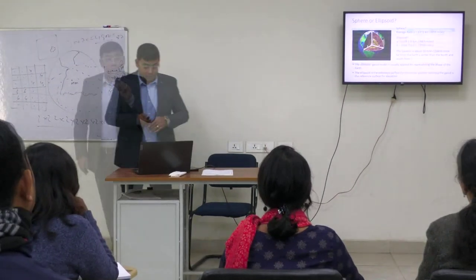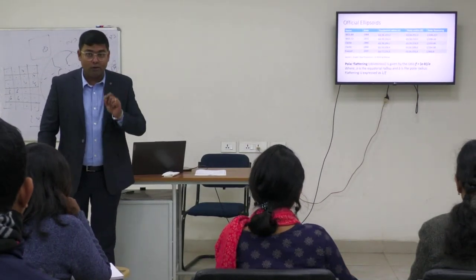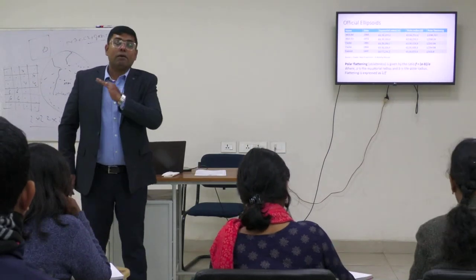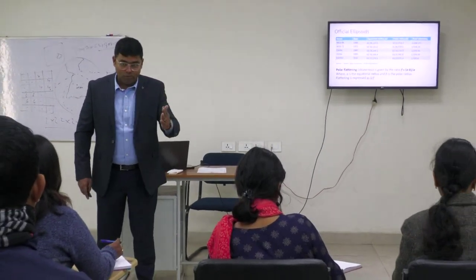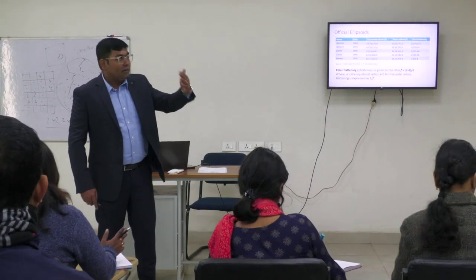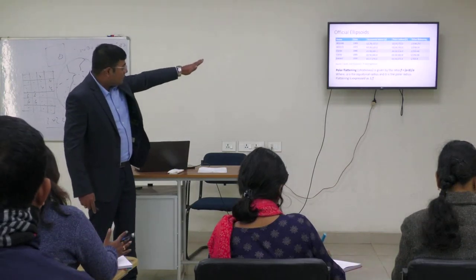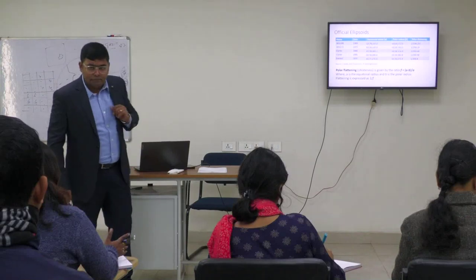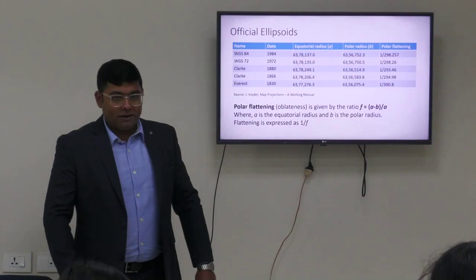Moving forward, I am always referring to it as the ellipsoidal model because there are numerous ellipsoids. The ellipsoid is a global model that measures the Earth's semi-major and semi-minor axes. There are several official ellipsoids, and if you examine the equatorial radius and polar radius in each of these models, they differ slightly, because these are mathematical models.